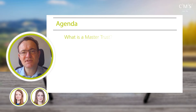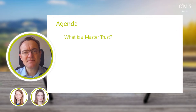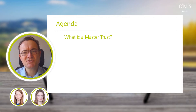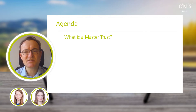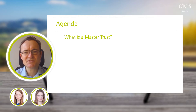A master trust is now defined in legislation to mean an occupational pension scheme which is providing money purchase benefits and which is used by two or more employers who are not connected to each other. In most cases, master trusts have lots of employers with no connection, all effectively outsourcing their defined contribution pension arrangement to the master trust provider.